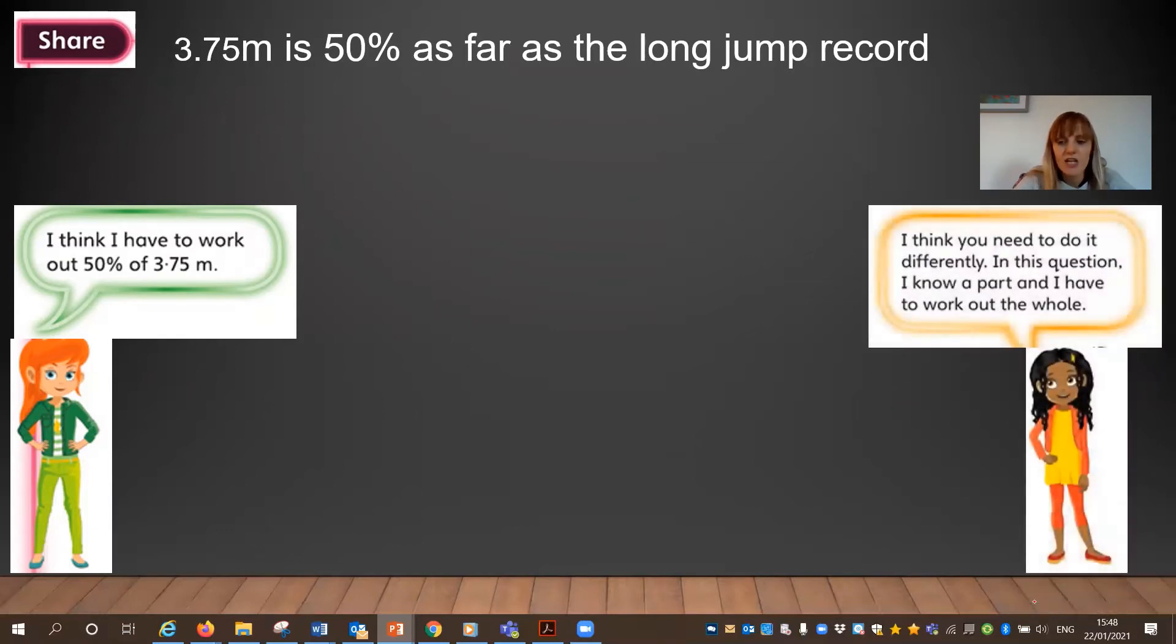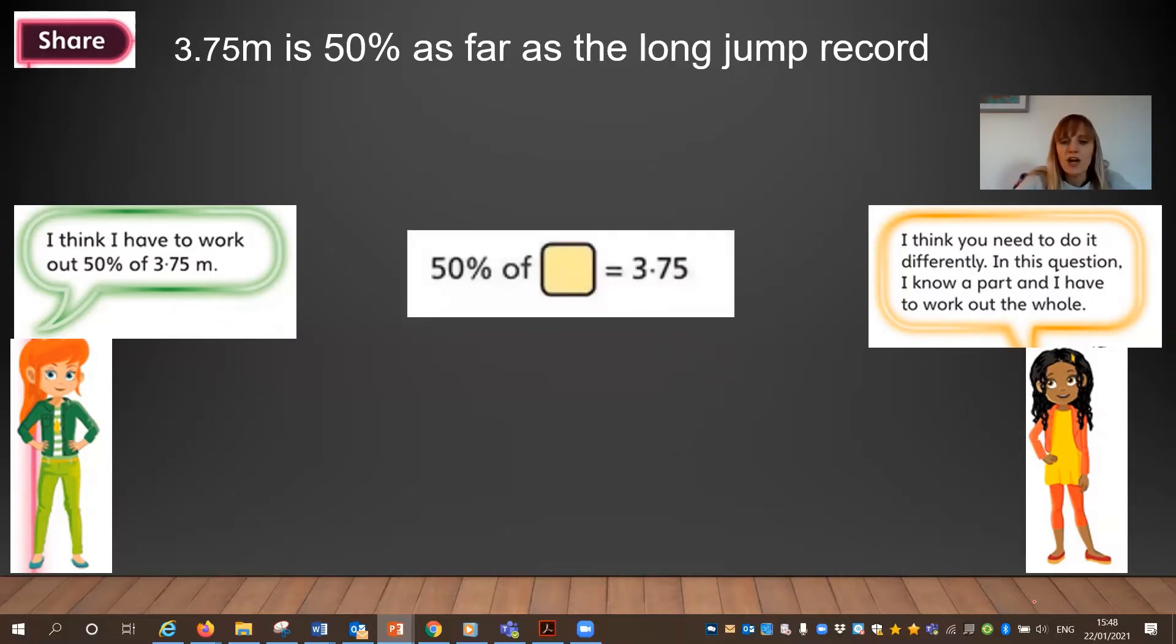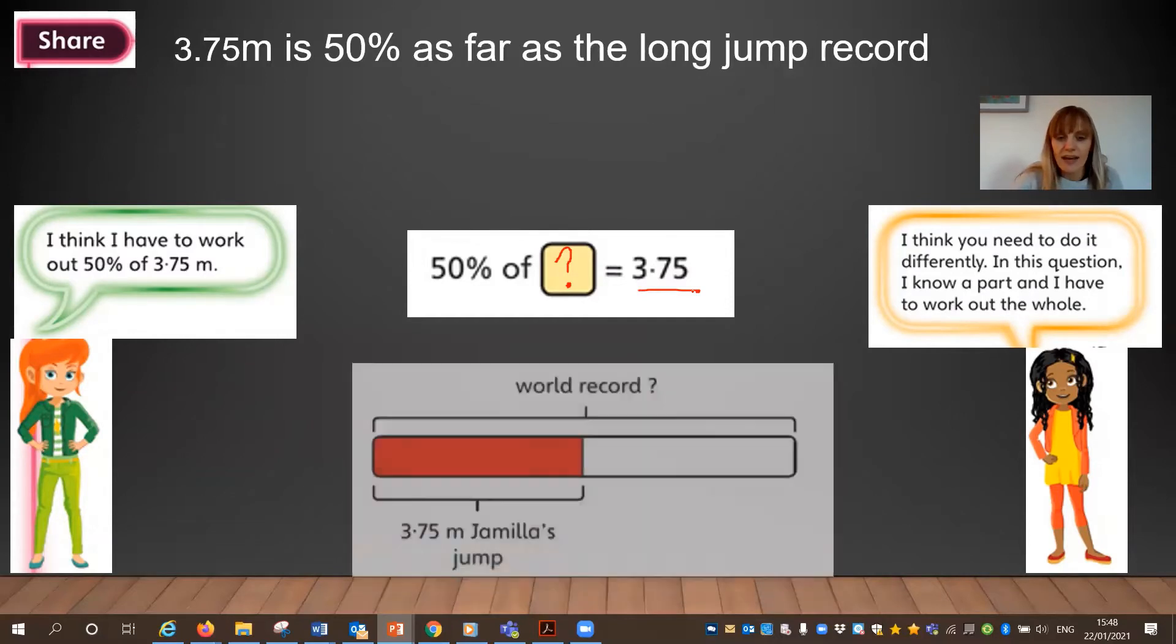So here's the fact that we know 3.75 metres is 50% as far as the long jump record. Now this girl here has said I think I then have to work out 50% of 3.75. Do you agree with that? Let's see what this other girl here says. She says I think you need to do it differently. In this question I know a part but I have to work out the whole today. And I think she's correct because she's saying 3.75 is 50% as far. It's not saying what is 50% of this. So the sum would actually look like this. 50% of something. So here in the problem now we don't know what the 50% what the whole number is that we're finding 50% of. All we know at the moment is the answer. So how can we calculate that missing part?